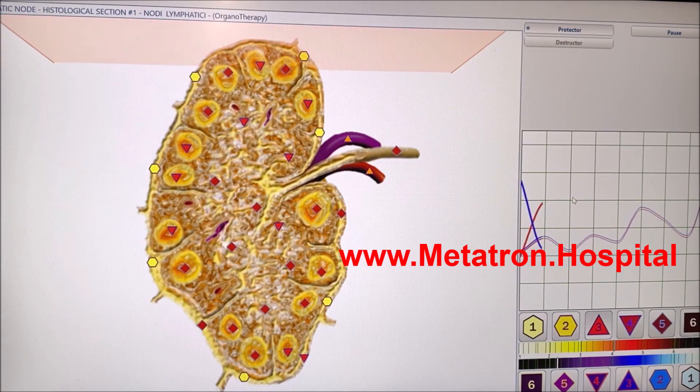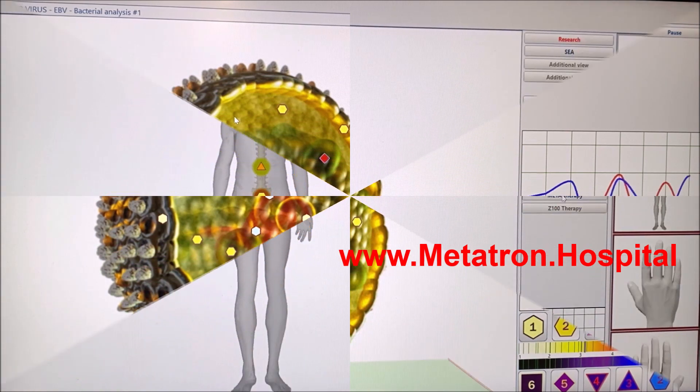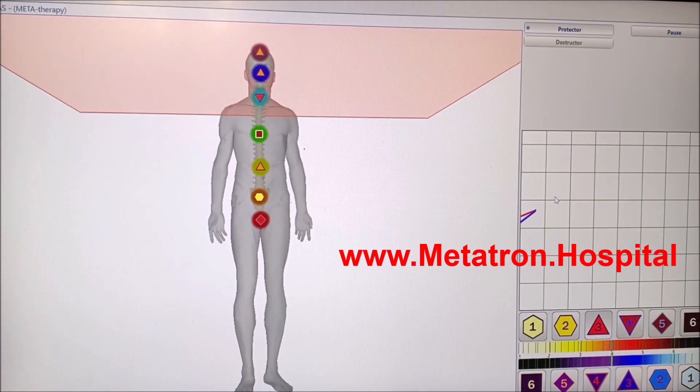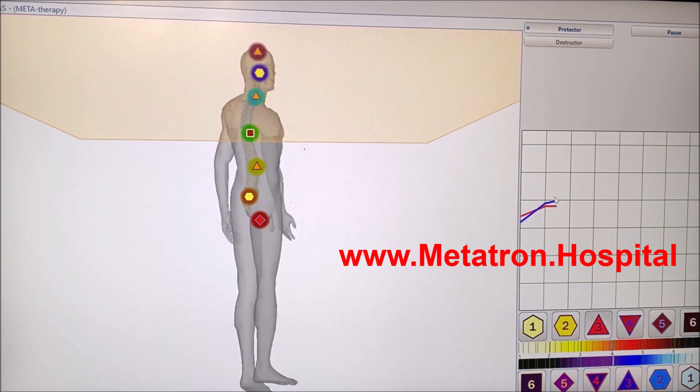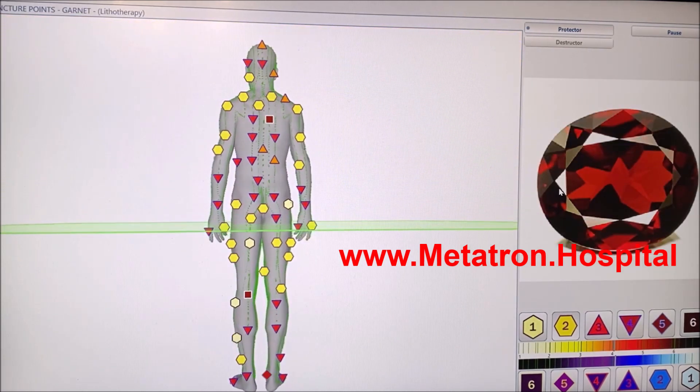Metatron remote can be applied at any distance using the client's information, which is used as a medium for quantum link between the Metatron device and the client. This was referred to as instantaneous action at a distance by Einstein. Modern physicists named it quantum entanglement.